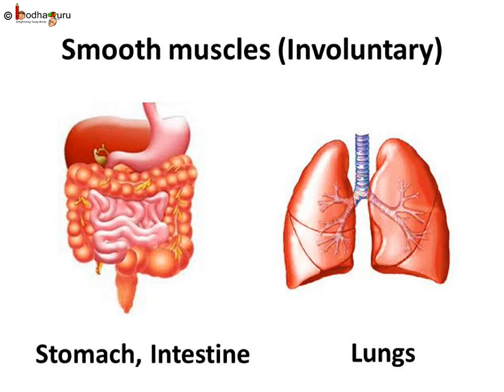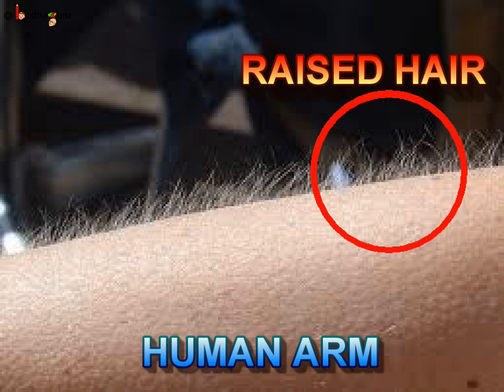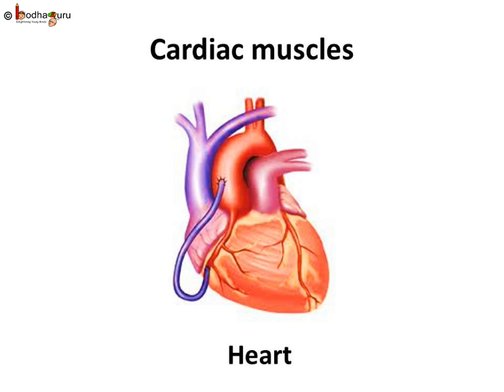What happens when you feel cold or get scared? The tiny muscles at the bottom of the hairs on your arms make your hairs stand up when you are cold or suddenly feel scared. And what about the muscles of the heart? They also keep working by themselves and cannot be controlled by us. They work non-stop, pumping blood through the entire body. These are striped and branched muscles.